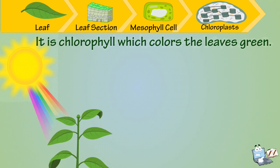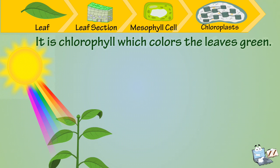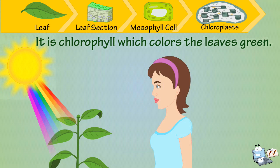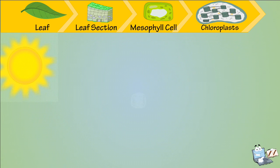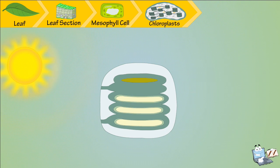Chlorophyll absorbs red and blue light from the sunlight that falls on leaves. Therefore, the light reflected by the leaves is diminished in red and blue and appears green. When the light energy from the sun is captured by the chloroplast,